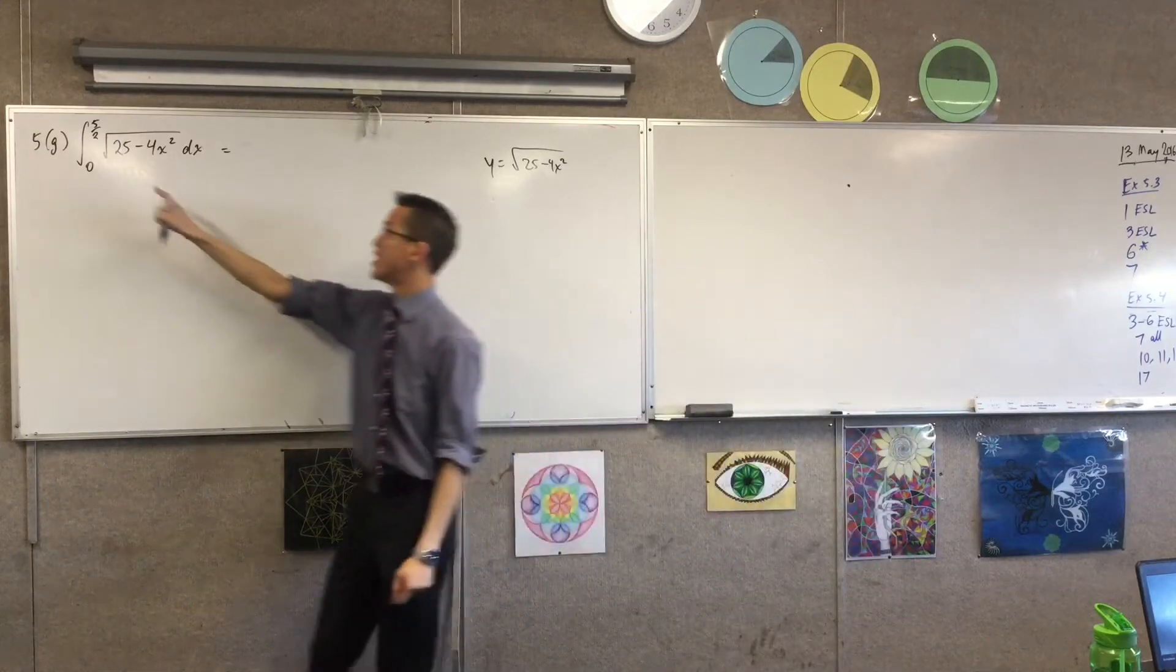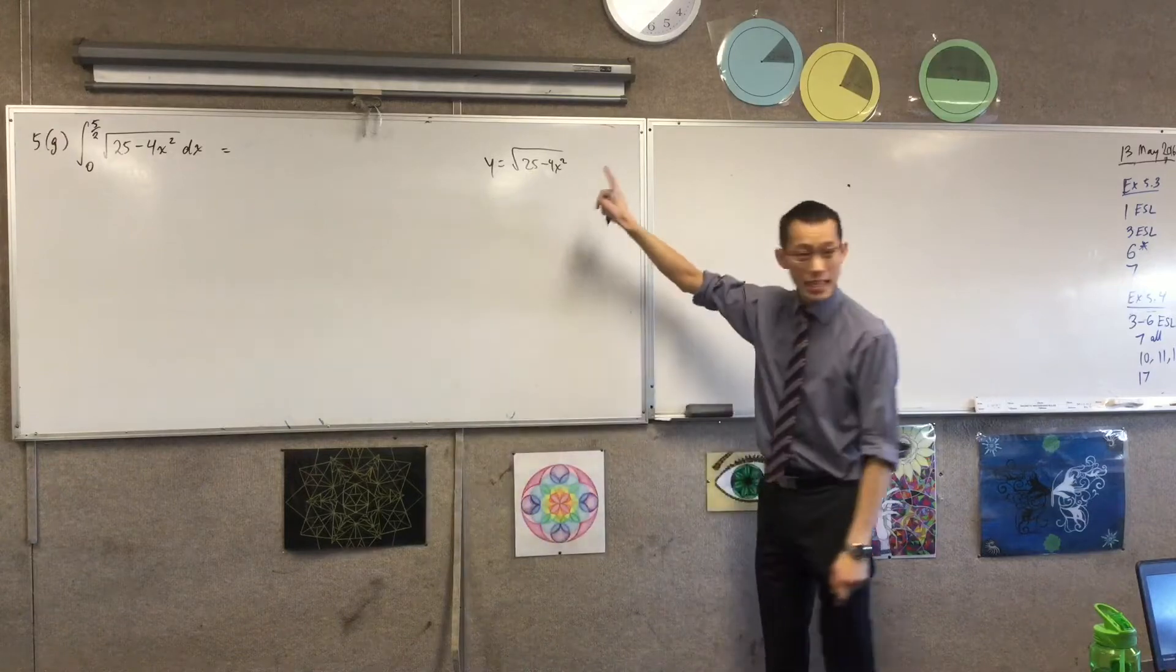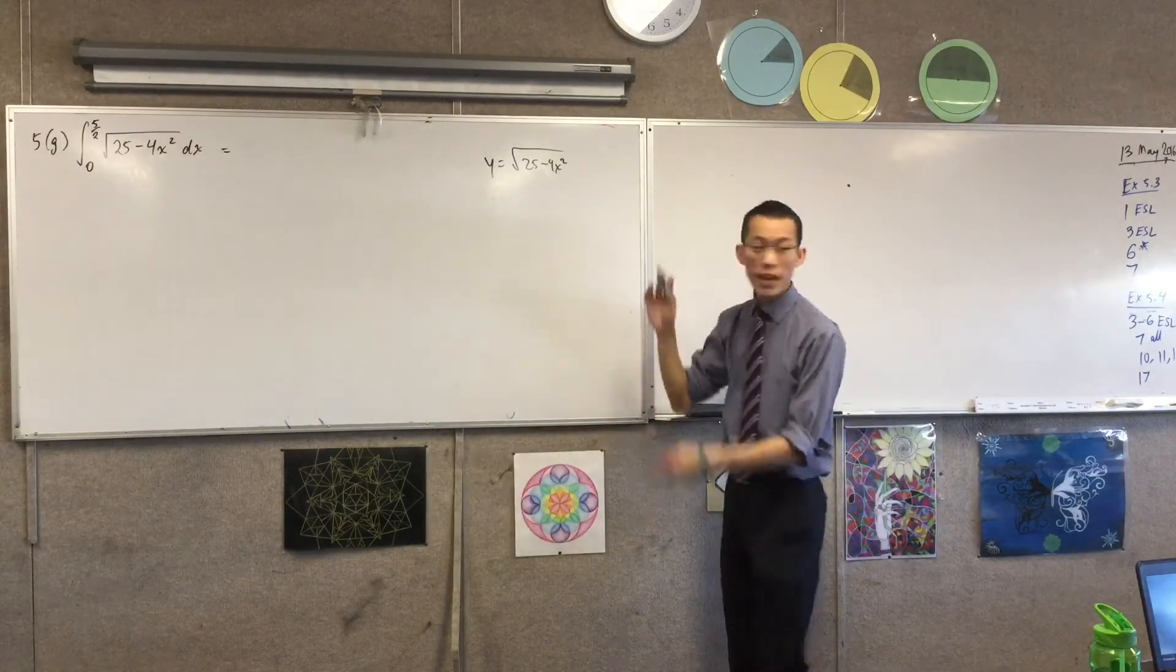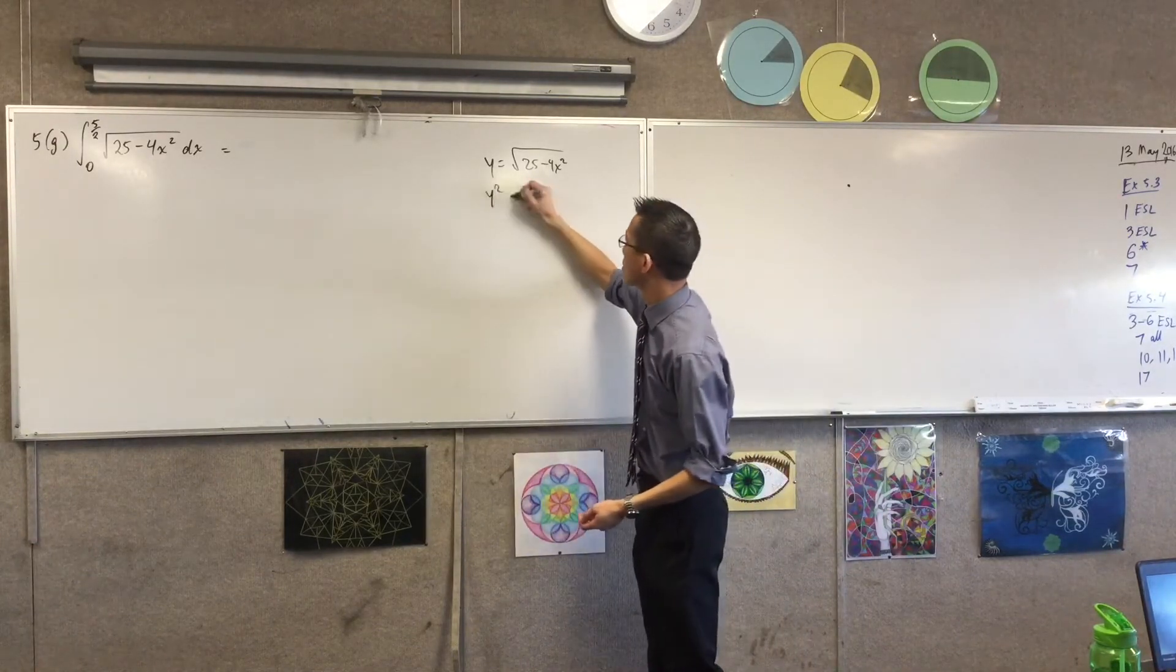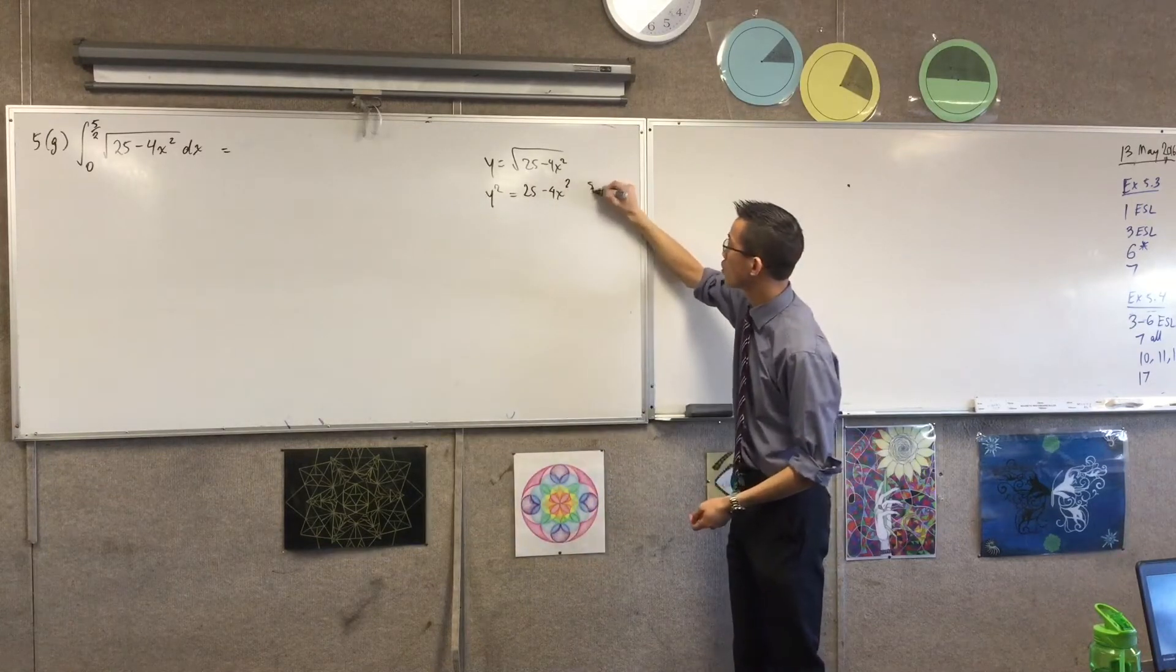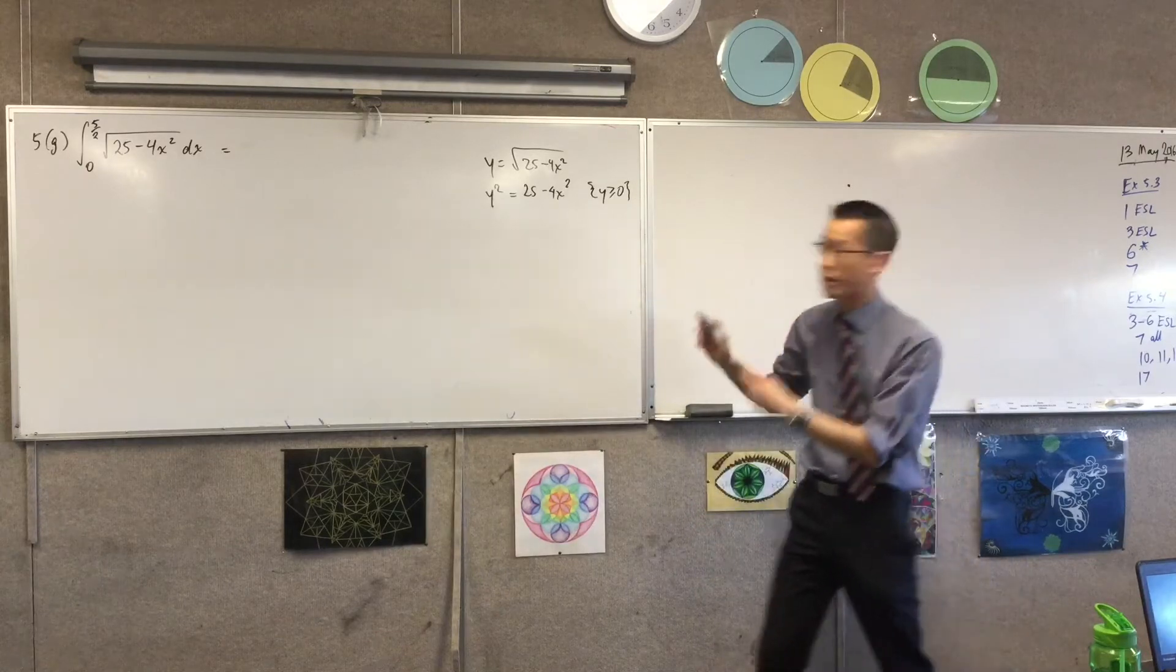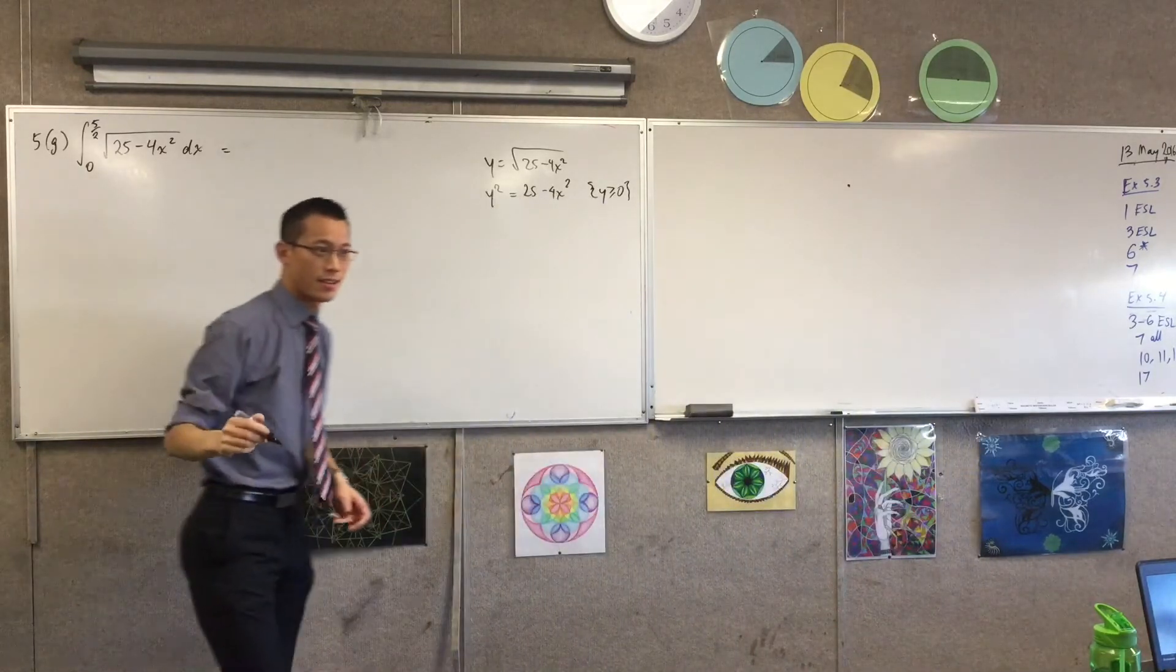Because what I want, being that it's a definite integral, what I want is an area, right? So if I think about this, if I square both sides and note the fact that the original equation has a restriction that disappears once I've squared it, so I'm just going to state it. What is this thing?